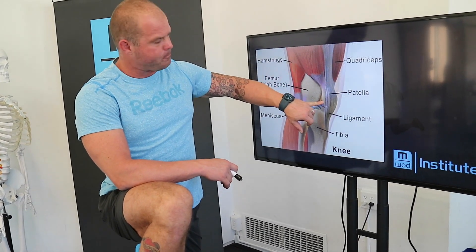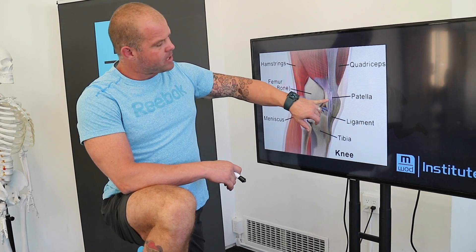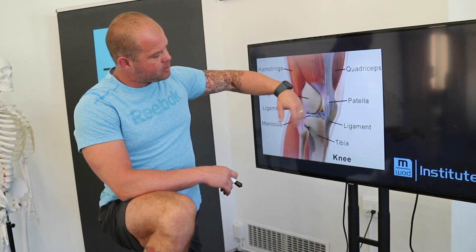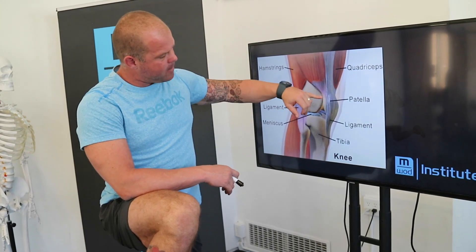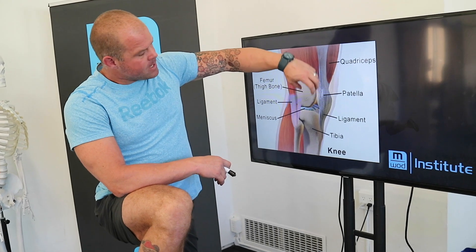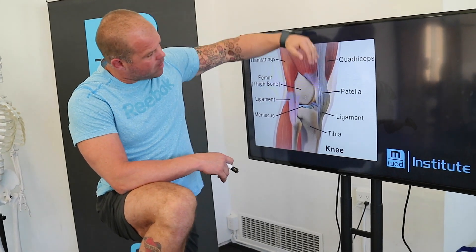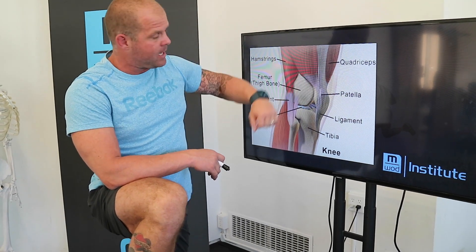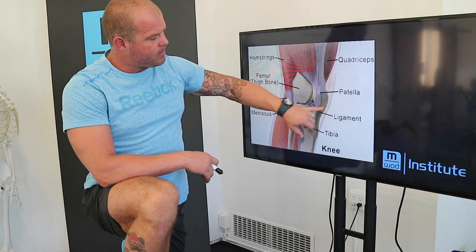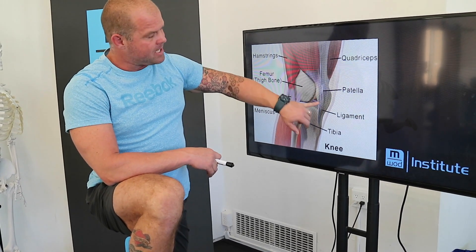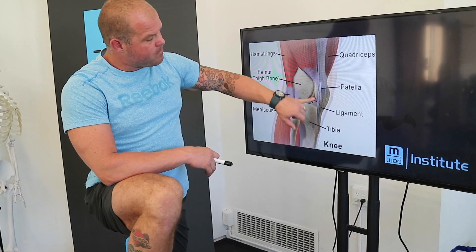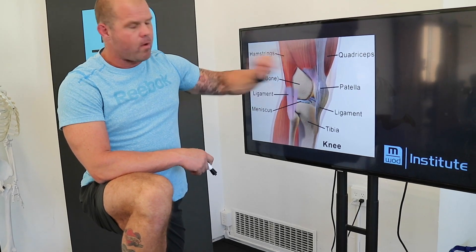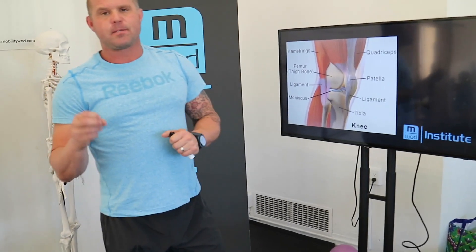The patella is what's called a sesamoid bone — a bone that shows up inside a ligament. It allows us to create mechanical advantage of the quadriceps in terms of flexing the knee and extending the hip, letting this long quadricep system go over the very complex yet miraculous joint of the knee. When people get hot around the patella and have some kind of patellar tendinopathy, typically they're saying, 'I have this nondescriptive, nonspecific pain in this area.'